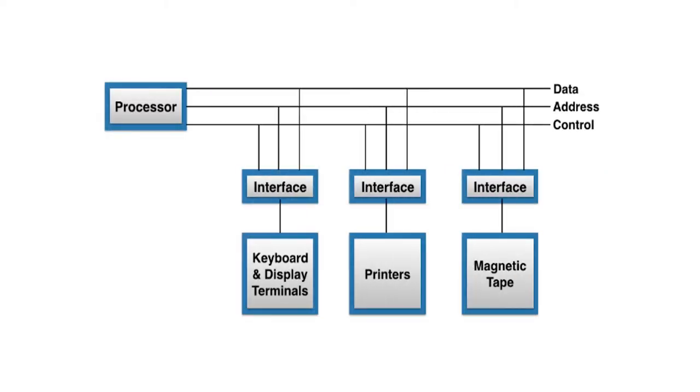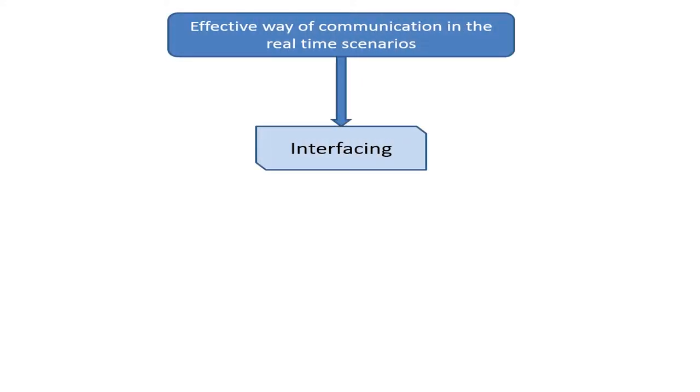Let's discuss the meaning of interfacing first. If we want to use input output devices, there must be something between the input output device and the system which is called interface. Interfacing is the way to transfer information in various ways and communicating without having a deadlock. We can also define it as the effective way of communication in real-time scenarios.